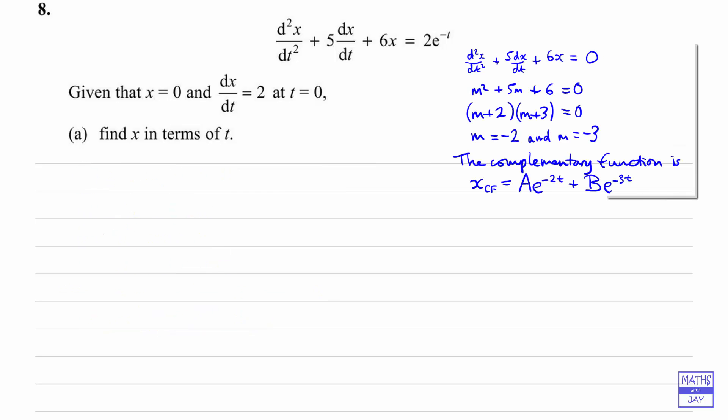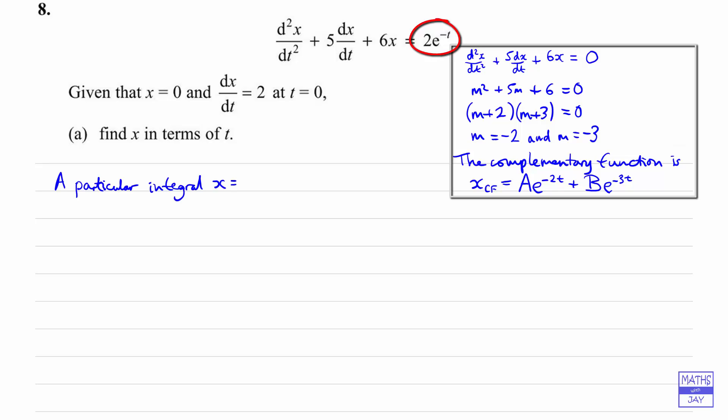So that's one part — let's just put that to one side. Now we're looking for the second part of the solution, and we need to look at the right hand side of the given equation, so that's 2e^(−t). What we're looking for here is a particular integral — something which, when we differentiate it, we're going to get a multiple of e^(−t), because we're going to differentiate it twice and each time we differentiate we're still going to get a multiple of e^(−t). So we know that x is a constant — let's call that λ times e^(−t).